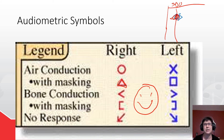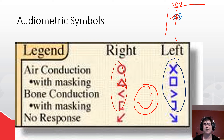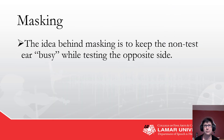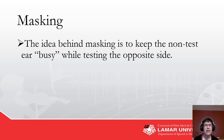Any of these symbols can have arrows drawn down, and that means no response at the limits of the equipment. Masking means you keep the non-test ear busy while testing the opposite side.